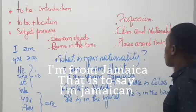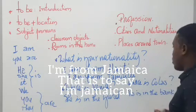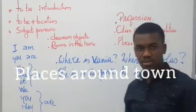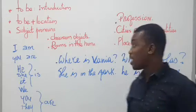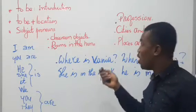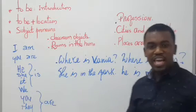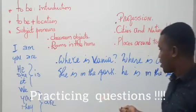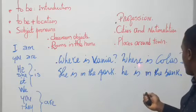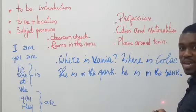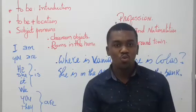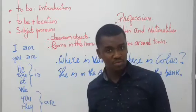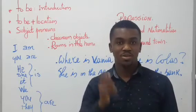Now we move to places around town. Do not forget, today we talk about 'to be' plus location. Here are some questions to practice with me. Where is Vanya? She's in the park. Where is Kola? He's in the bank. Where is your mother? My mother is in the living room. Where is your father? My father is in the kitchen.